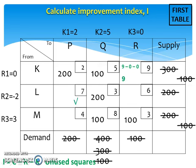At this unused square, we have 7 minus negative 2 minus 2, so we get improvement index equals 7. Next, here we have 6 minus negative 2 minus 0, so we get improvement index equals 8. And finally, here we have 4 minus 3 minus 2, so we get improvement index equals negative 1.